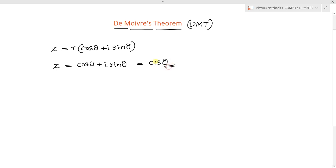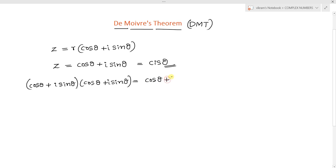Now if we extend this concept — if we multiply cos θ plus i sin θ with itself — that means (cos θ + i sin θ)², which is in the form of (a + b)². We can write this as a² = cos²θ plus b² = (i sin θ)² = i² sin²θ, where i² equals minus 1, giving us minus sin²θ.